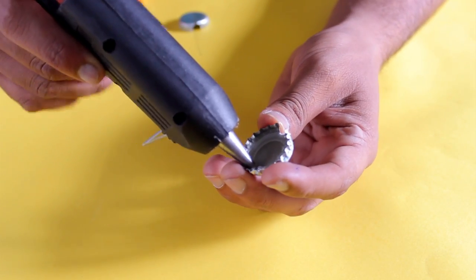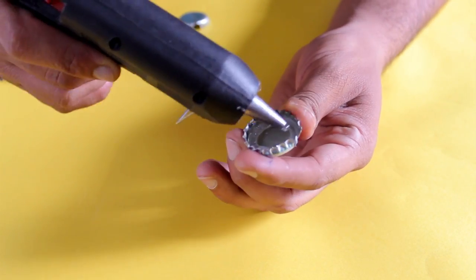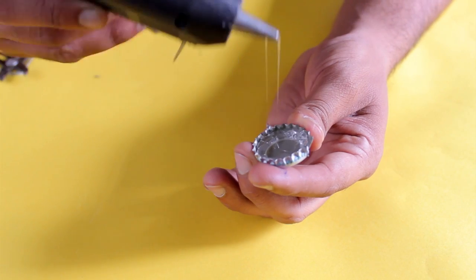Apply the hard glue inside the cap and fix this previously prepared aluminum sheet inside this cap.